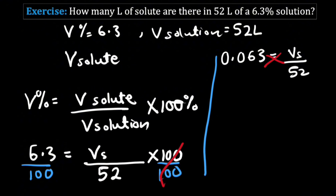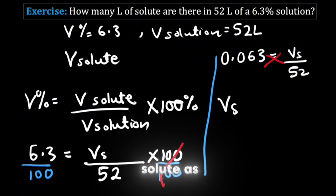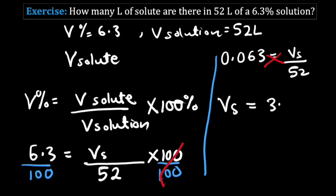Now do cross multiplication and finally you will get the volume of the solute as 3.3 liters.